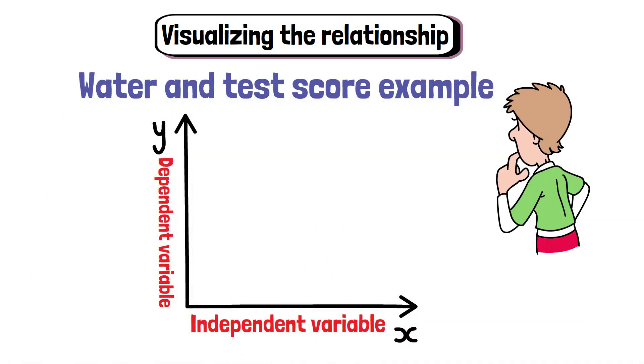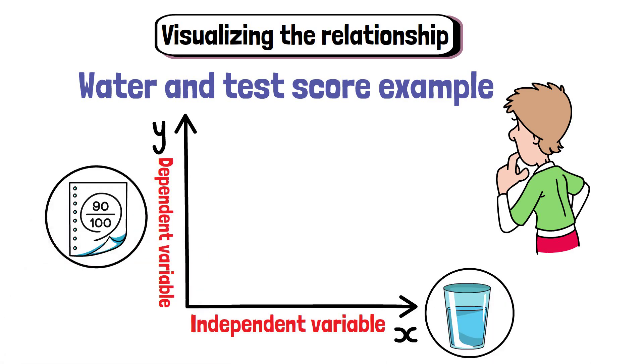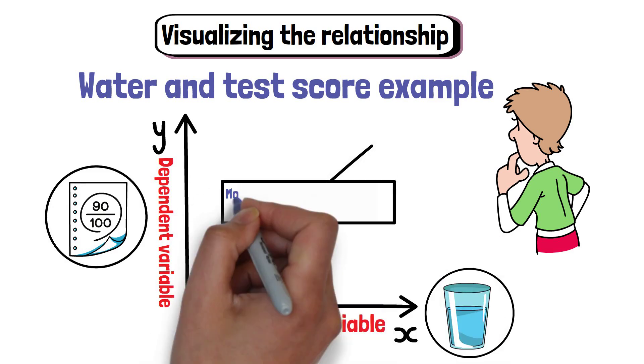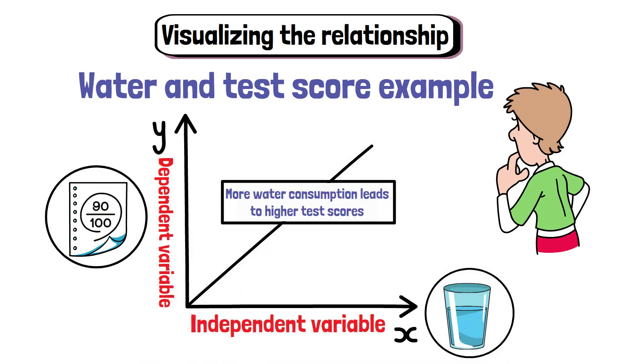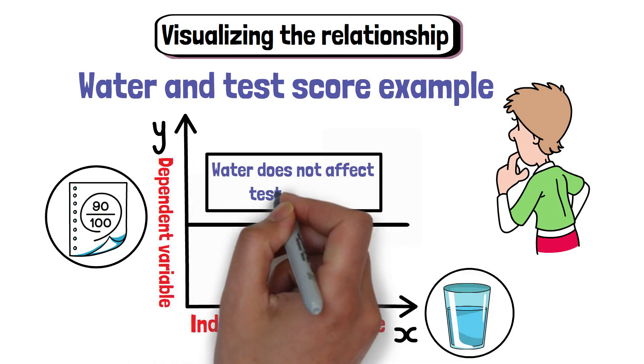In our water and test score example, you could create a graph showing the amount of water on the x-axis and the test scores on the y-axis. If the graph shows a line going upwards, it indicates that more water consumption leads to higher test scores. If the line is flat, it suggests that water does not affect test scores.